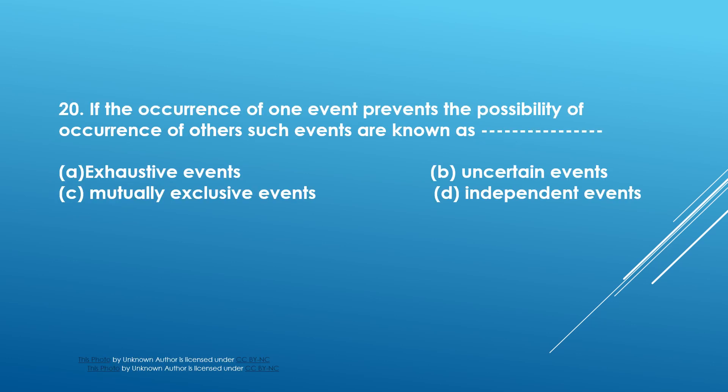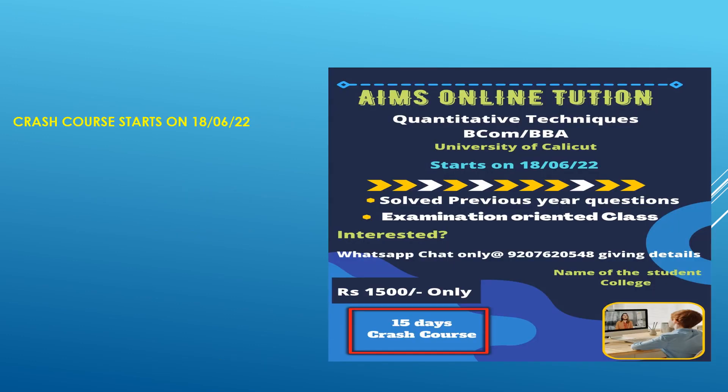Twentieth question: If the occurrence of one event prevents the possibility of occurrence of others, such events are known as dash. Options: exhaustive events, uncertain events, mutually exclusive events, independent events. The answer is mutually exclusive events. Thank you.